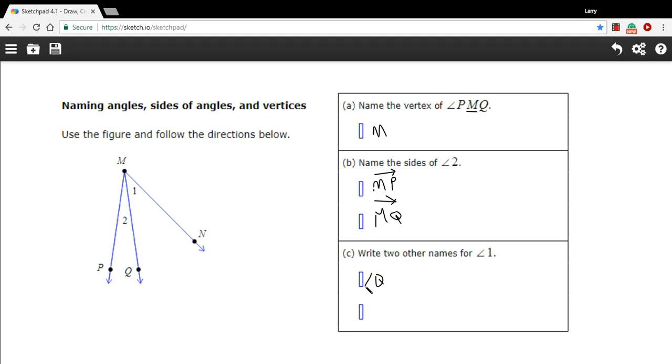I suppose I should put the angle symbol first. So angle QMN or angle NMQ. So that's a little bit of work with naming angles and sides and vertices.